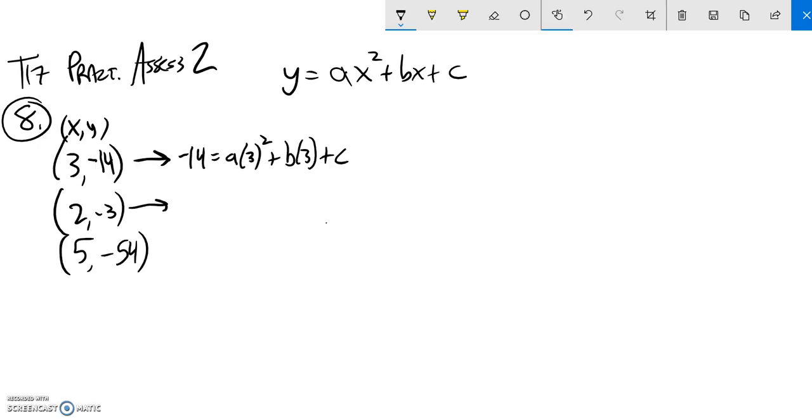Similarly, the next point when y is negative 3, x is 2. So a times 2 squared plus b times 2 plus c. And then the last point, same thing. When y is negative 54, x is 5.